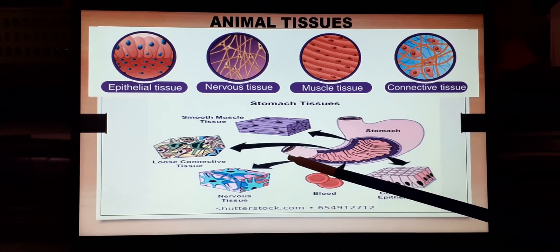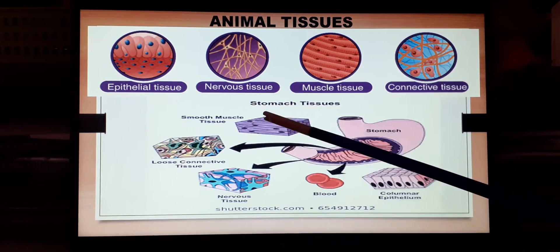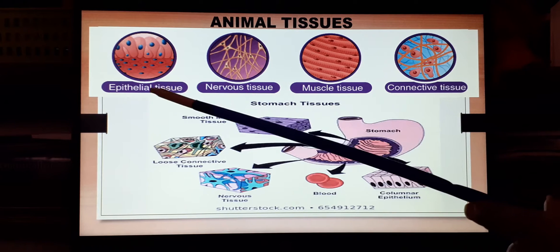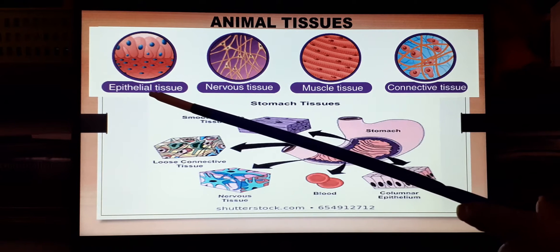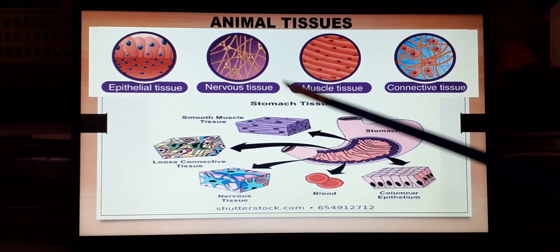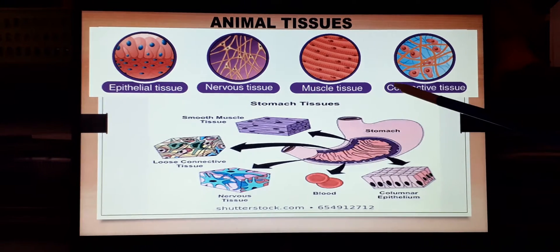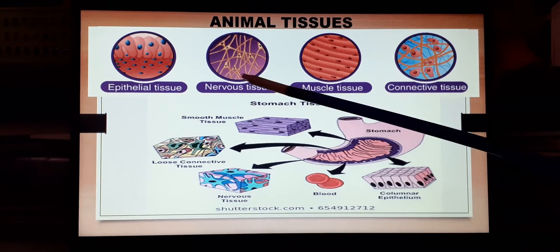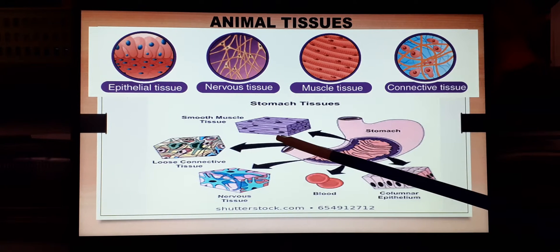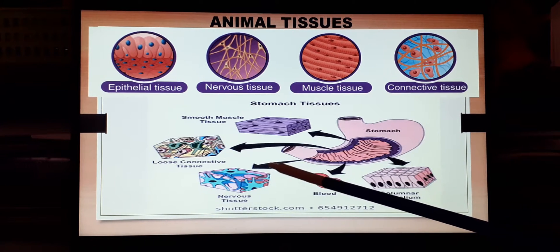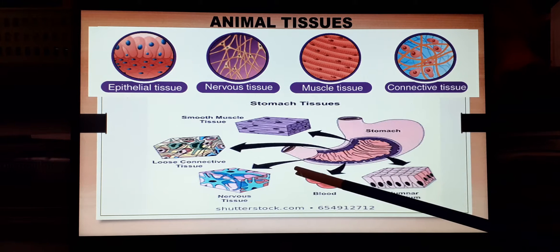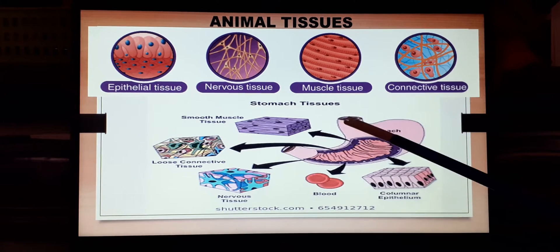Let's see where the various animal tissues are distributed and what are the different types. The main types are the epithelial tissue, the nervous tissue, the muscle tissue, as well as the connective tissue. All these four tissues are present throughout the whole body and the various organs of the body.